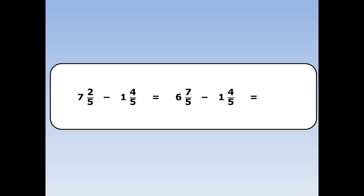Now I can take away as normal. I do the whole numbers: 6 take away 1 is 5. Then I take away the fractions: 7 fifths take away 4 fifths is 3 fifths. 5 and 3 fifths is the final answer.